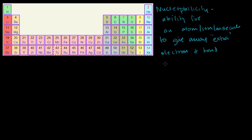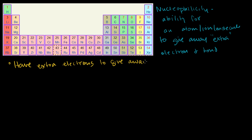As a first cut, if you want to identify a good nucleophile, it should have extra electrons to give away. The best things that have extra electrons to give away are negative ions, or anions. So at a very high level, something like the fluoride anion.